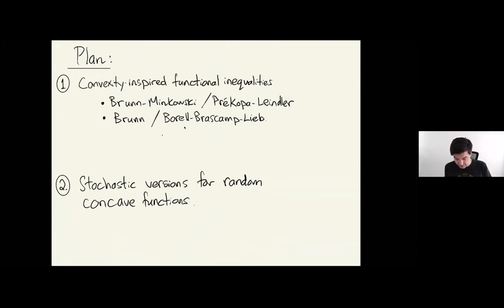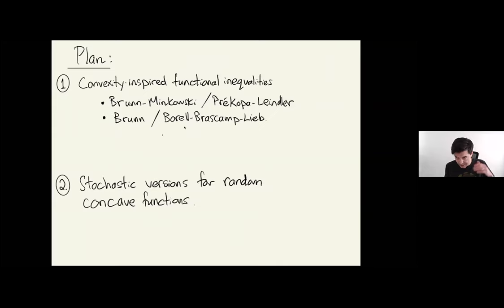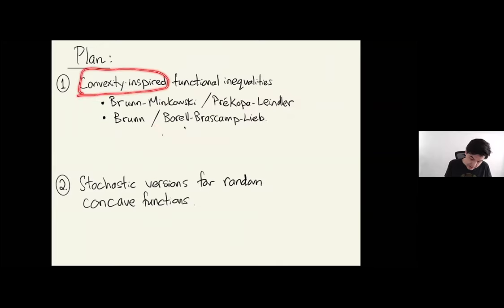I have two parts. The plan is to recall some convexity-inspired functional inequalities — things of Brunn-Minkowski type and functional versions like the Prékopa-Leindler inequality — and then their dimensional forms, known as the Borell-Brascamp-Lieb inequalities. Then I want to talk about viewing these from a stochastic point of view, associating empirical or random objects and random functions, and asking what can be said for these stochastic objects in terms of associated functional inequalities and their stochastic versions, and what role convexity plays.